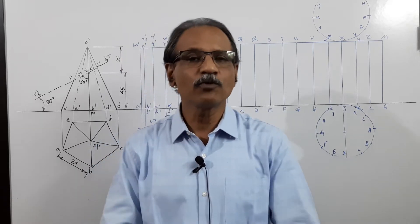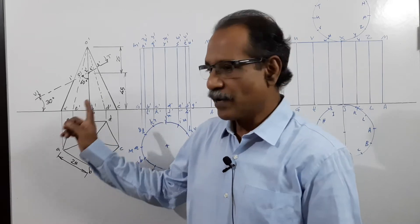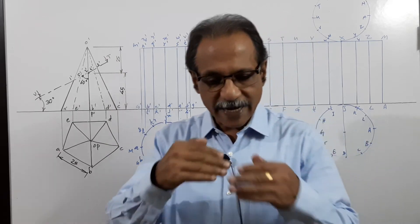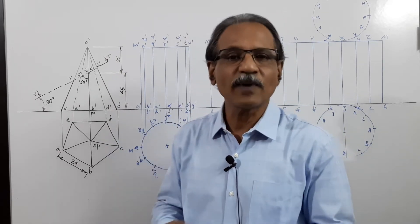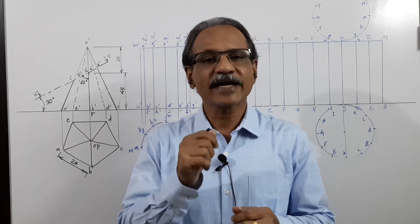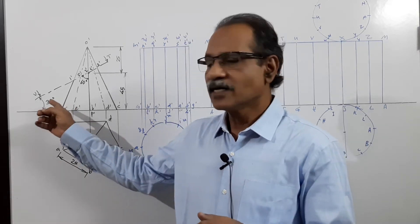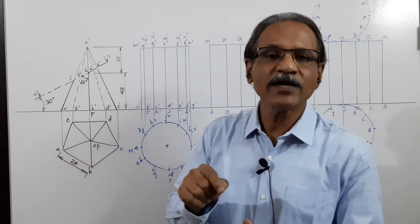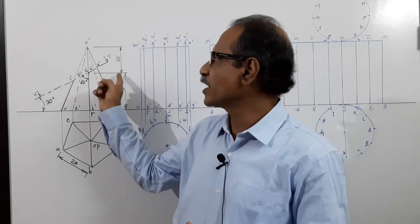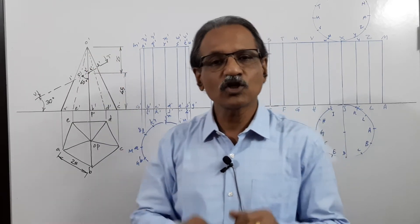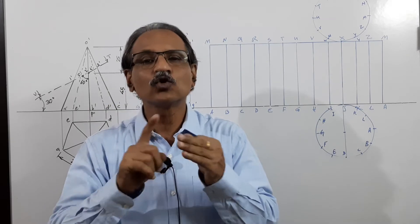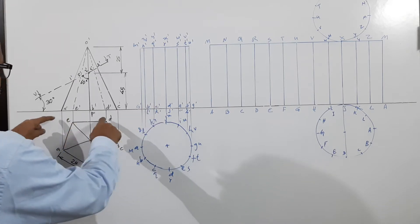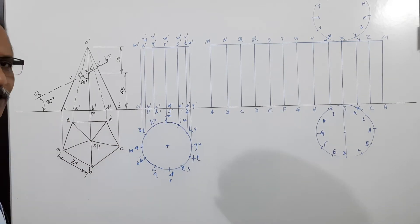There are two questions in module 3. The first question: a pentagonal pyramid, 25 mm side of base, 70 mm axis, stands on HP on its base with a side of base parallel to VP. This is cut by a cutting plane which is inclined at 60 degrees to the axis, that is 30 degrees to HP, passing through a point on the axis 25 mm below the apex. You are asked to draw the sectional plan, sectional elevation, and true shape of section. First of all, draw an XY line and draw the plan with one side DE parallel to the XY line.